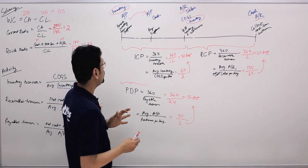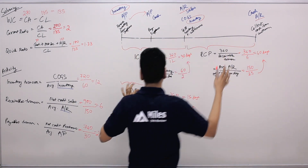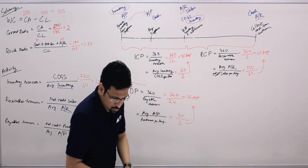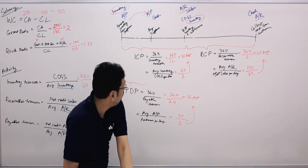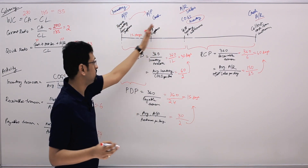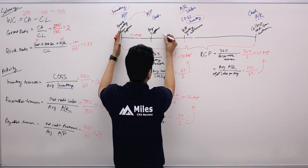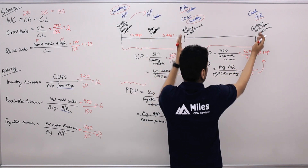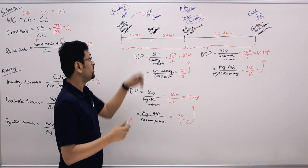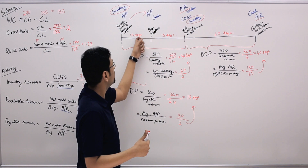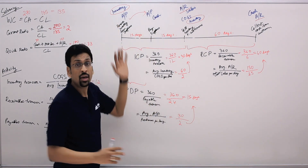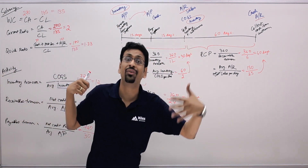Now let's look at the operating cycle. ICP is 30 days, payables deferral was 15 days, and receivables collection is 60 days. On the timeline: 15 days from receiving inventory to paying suppliers, then another 15 days to sell the inventory, then 60 days to collect cash. Operating cycle equals 15 plus 15 plus 60 equals 90 days — from when goods come in to when cash is realized.